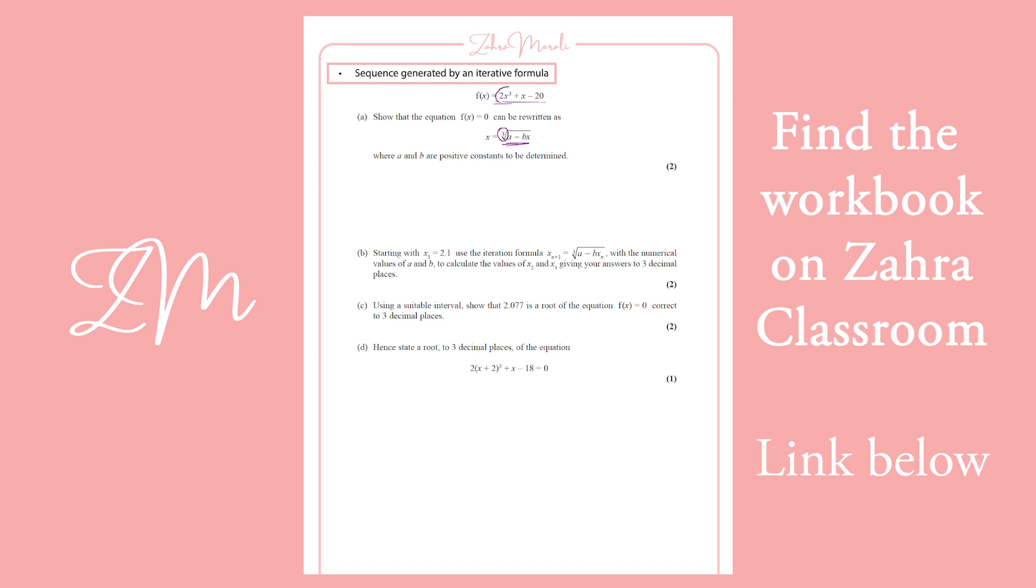So we want to make 2x cubed the subject of the formula. So equals 0. We're going to move everything over to the other side. That's not 2x cubed. So we get 20 minus x.